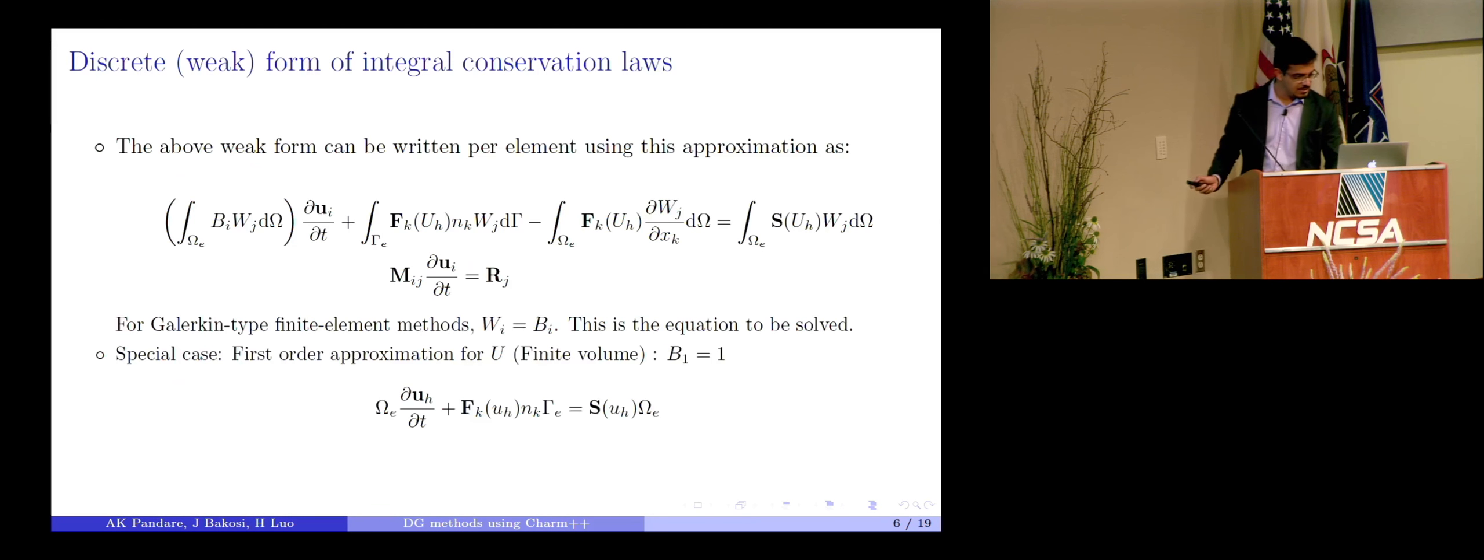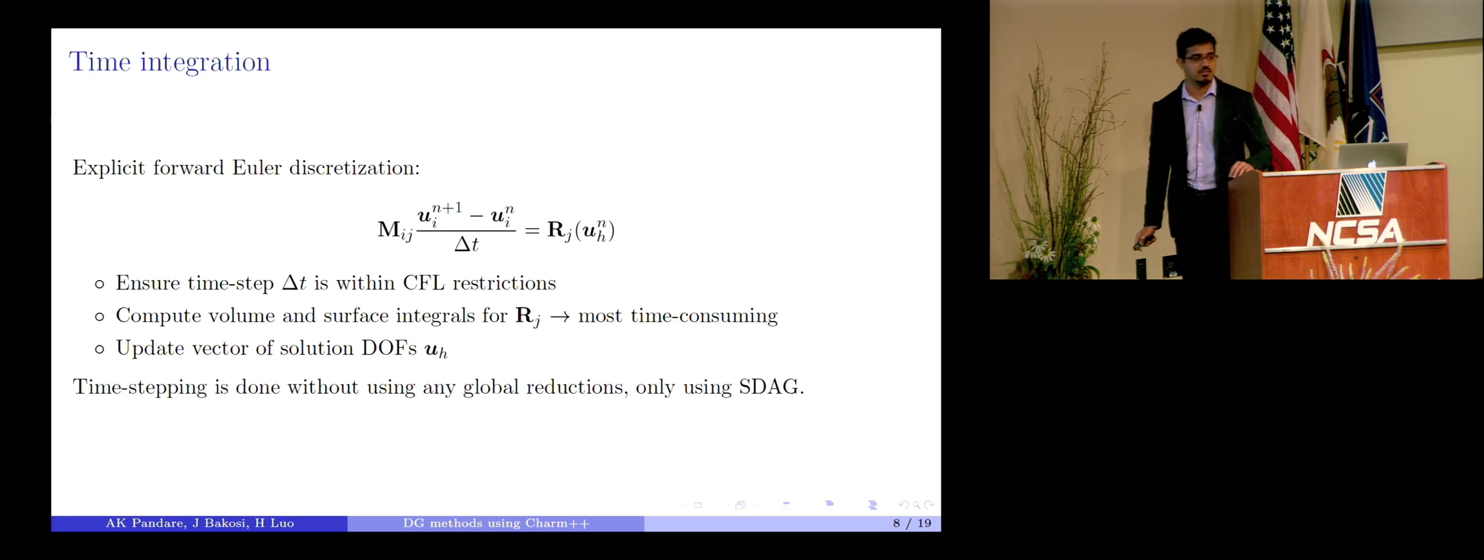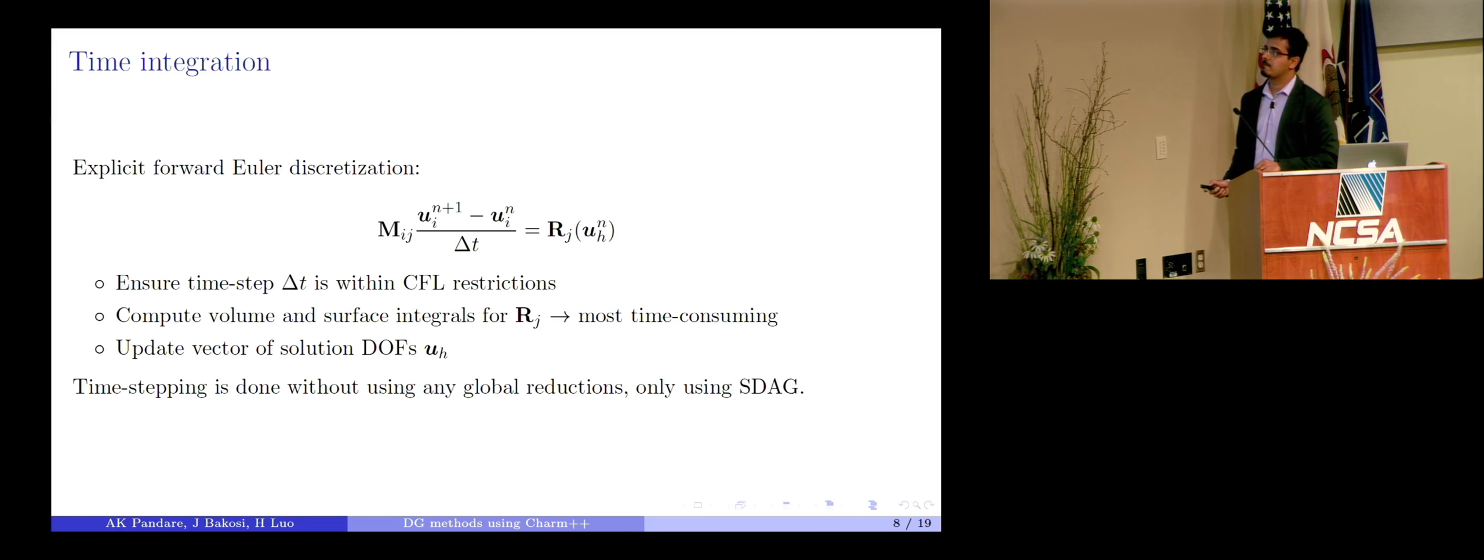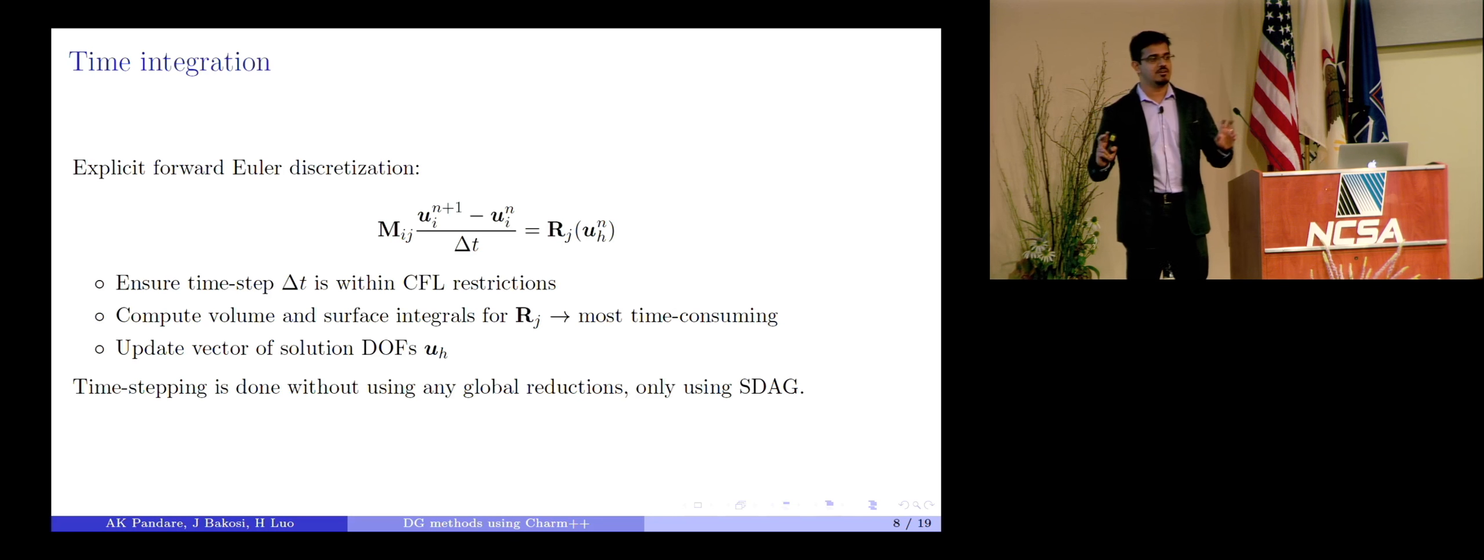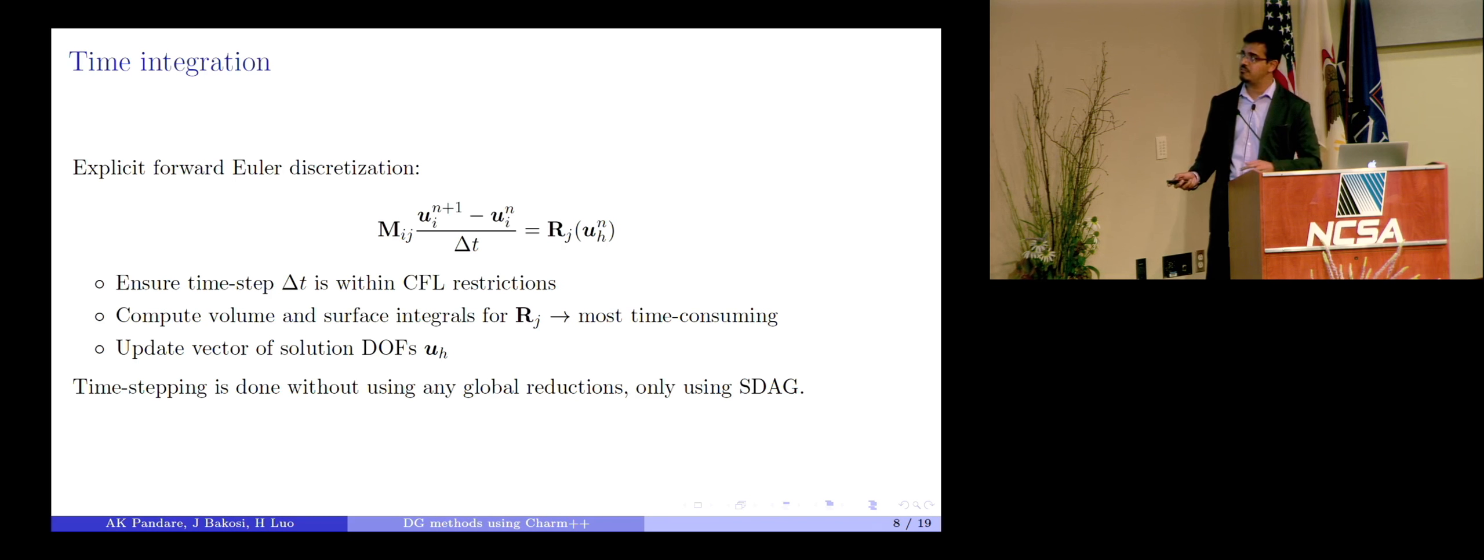Looking at the time integration, so the time derivative over here is still not discretized. We have a derivative term over here, right? We need to do something about that. So for that, we just use explicit forward Euler discretization, first order, nothing fancy here. So there is nothing new or fancy over here. So basically what happens in a time step is we first compute an allowable time step from the CFL criterion. Then we compute the right hand side, which is the most computation intensive part. The right hand side will consist of all the flux terms, which might be surface integrals or the volume integrals. Once we get that, we can update the vectors, the solution vectors, just using this algebraic equation. The good part about our implementation right now is time stepping is done without any global reductions. And we just use the SDAG to specify dependencies on the necessary parts. But there is no global reduction in any of the time stepping stage right now.